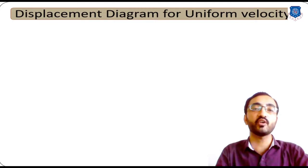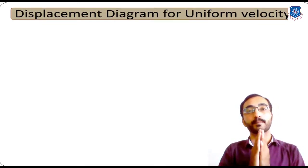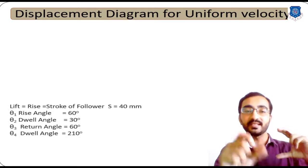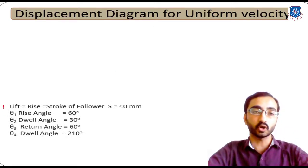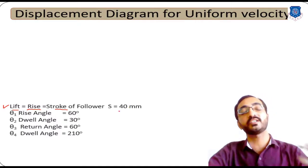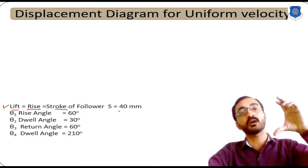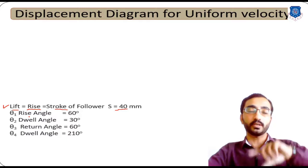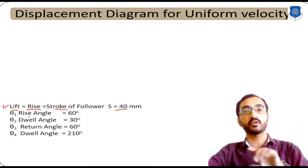Let's start with the displacement diagram for uniform velocity — meaning a body or particle is moving with constant velocity. To plot the displacement diagram we need some parameters. First, the total displacement, or stroke, of the follower — let's consider it as 40 mm. Then, the total rotation of the cam is one revolution or 360 degrees, and this 360 degrees is divided into four different phases.